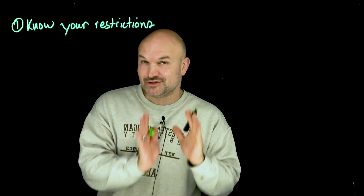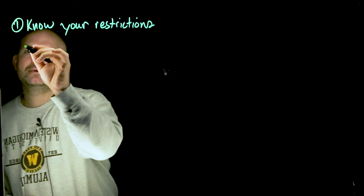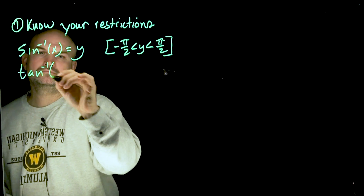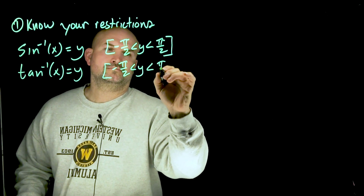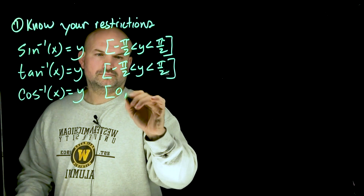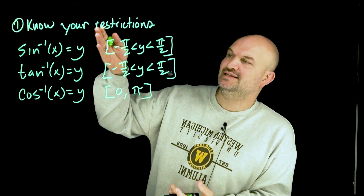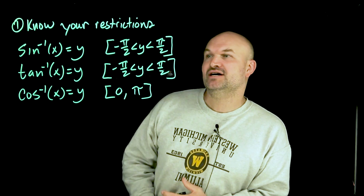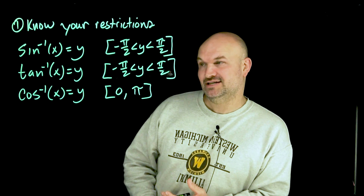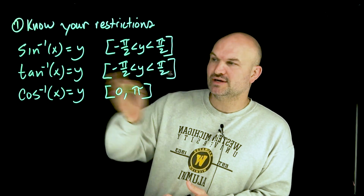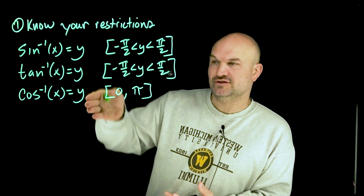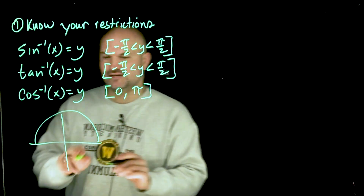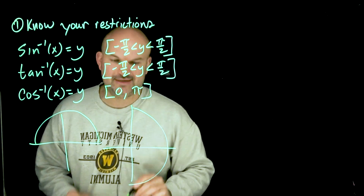Just a quick recap — make sure you have these memorized or written down. If I'm taking the sine inverse or the tangent inverse, I'm going to get a value of y, however that y is going to be restricted between negative pi halves (negative 90 degrees) and pi halves (positive 90 degrees). For cosine, when we take the inverse of cosine of a value, we get y — representing an angle — between zero and pi.